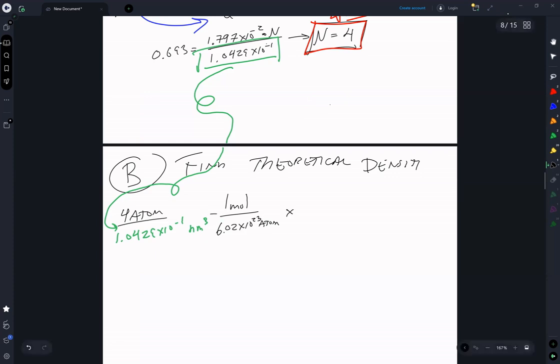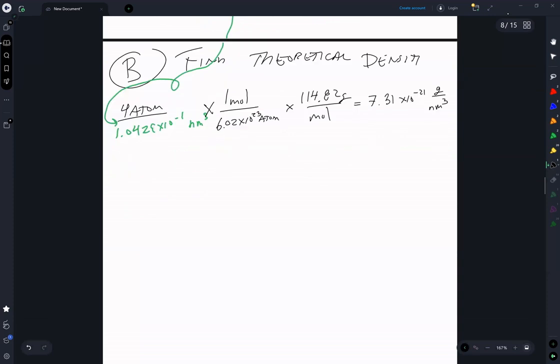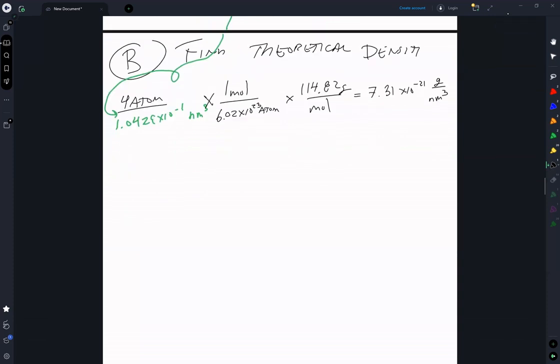We're going to take this here. The mole is equal to 7.31 times 10 to the minus 21 gram per nanometer cubed, which is a terrible set of units.